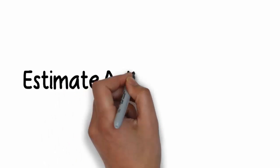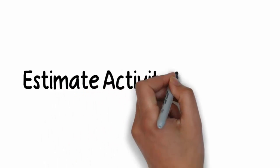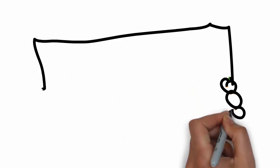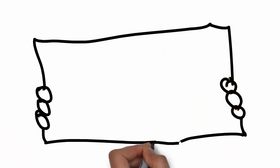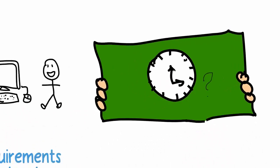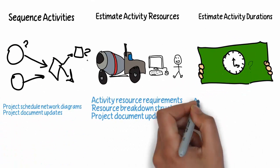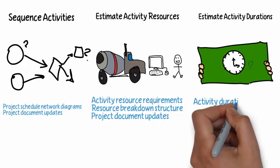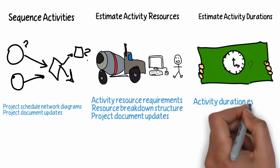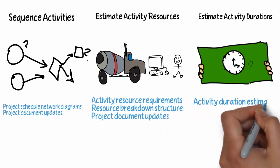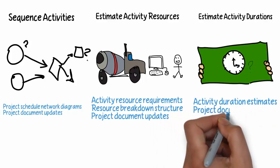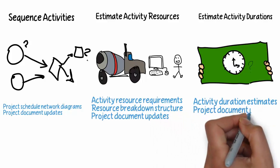We also have the process of Estimate Activity Durations, which is figuring out how long certain activities should or should not take. I like to draw these three processes side by side because we have our activity duration estimates, which might change based on the resources or even the sequences.